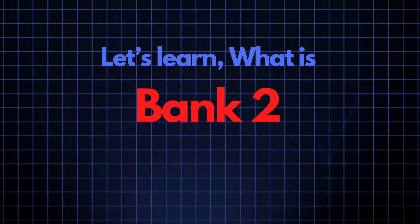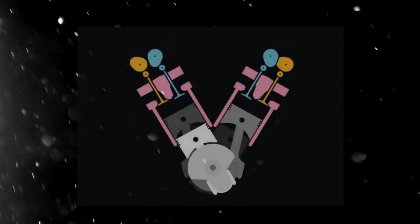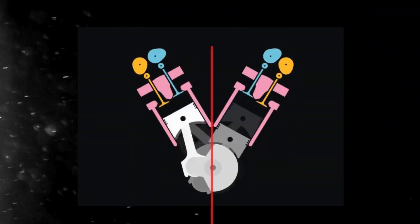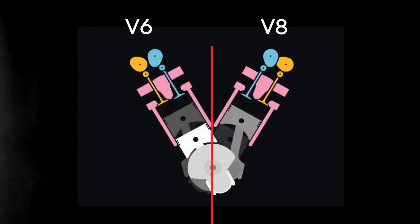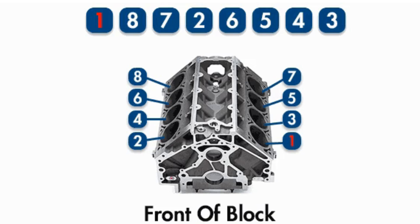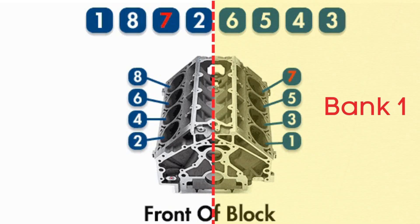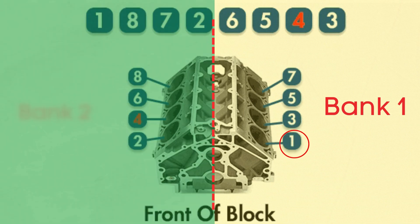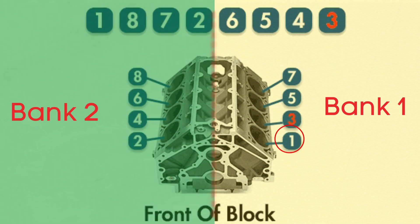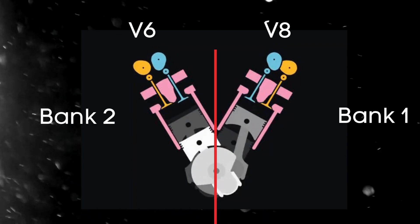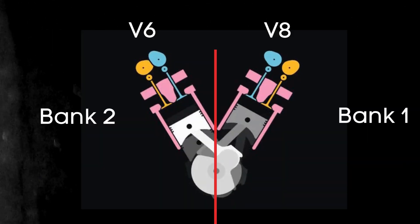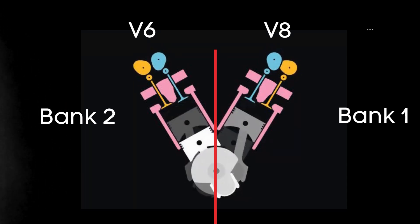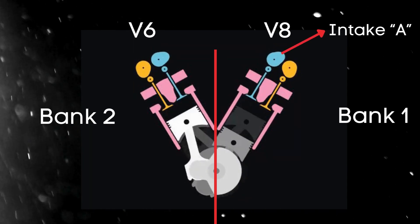Now let's break down what the bank 2 intake camshaft actually is. In engines with multiple cylinder banks, like V6 or V8 engines, you'll have two sides, or banks, of cylinders. Bank 1 typically refers to the side of the engine where cylinder 1 is located, and bank 2 is on the opposite side. For engines with dual overhead camshafts (DOHC), each bank has two camshafts — one for intake valves and one for exhaust valves.